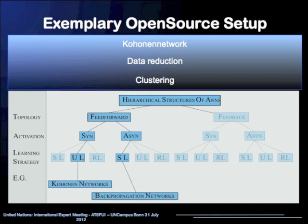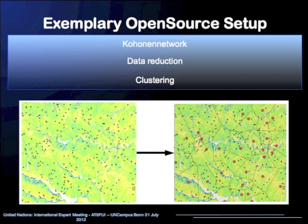The data is processed to R statistic, started by GRASS GIS, and there the Kohonen algorithm is used — a special kind of algorithm according to artificial neural networks. It is used for data reduction and for clustering, and in the hierarchical structure of ANNs it is a feedforward synchronous network with unsupervised learning. This clustering is shown on this slide: on the left hand side the input data points such as weather stations, and on the right hand side the so-called codebook vectors relevant for the Kohonen algorithm, each individually responsible for a certain cluster containing input information.